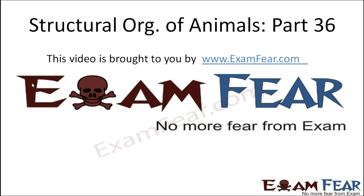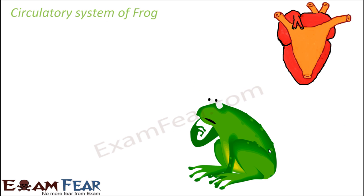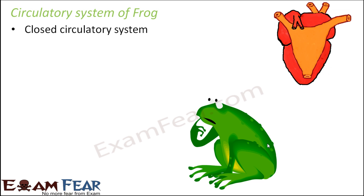This video on structural organization of animals part 36 is brought to you by examfear.com. We previously saw how the process of digestion takes place in frog. Now let us look at the circulatory system of frog and how blood circulation takes place, so that we can understand how the absorbed food is transported to different parts of the body.